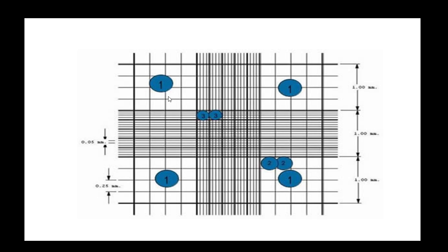Looking at the diagram of the Neubauer counting chamber, it has corner areas and a middle section. The WBC cells are counted in the 4 corner areas. In the middle section, platelets and RBC cells are counted. So in this chamber, only the corner areas are used for WBC cell counting.